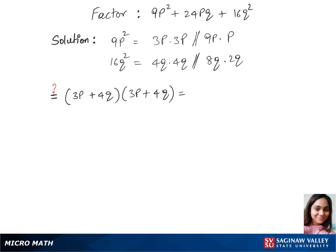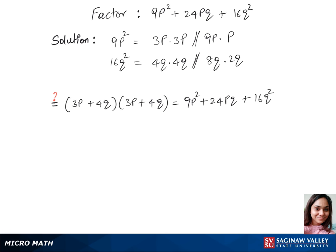We'll multiply this and cross check. So that's 3 times 3, which gives us 9p square plus 24pq plus 16q square. Yes, this matches up with our given trinomial.